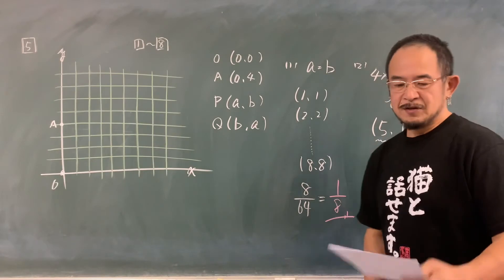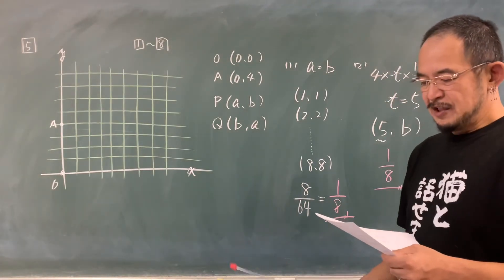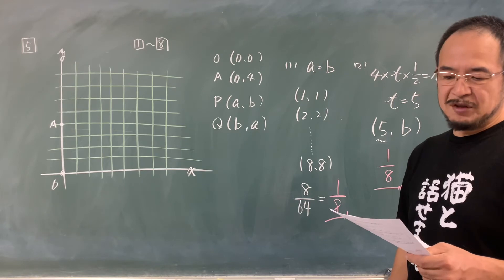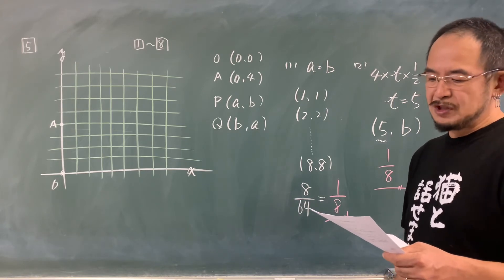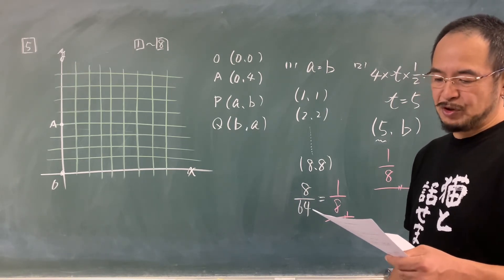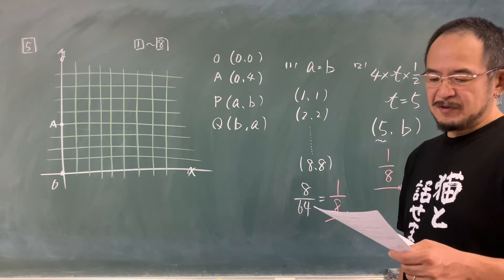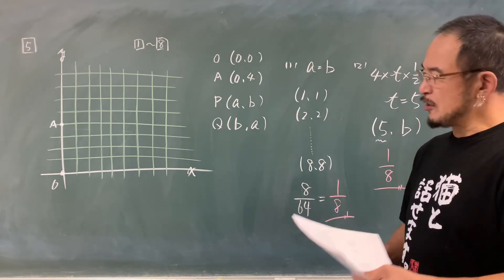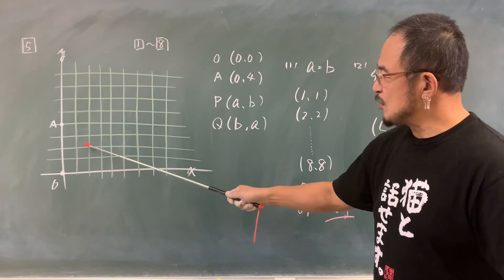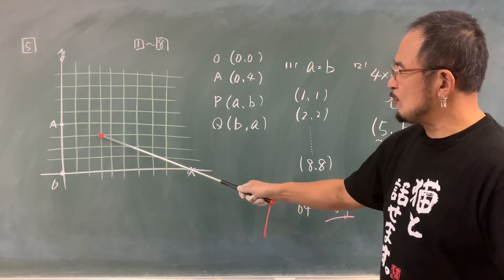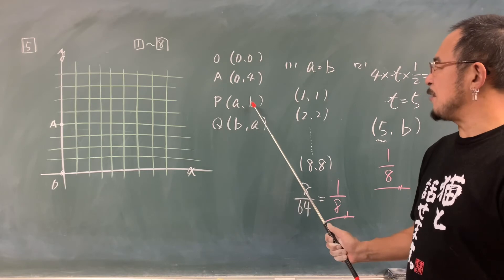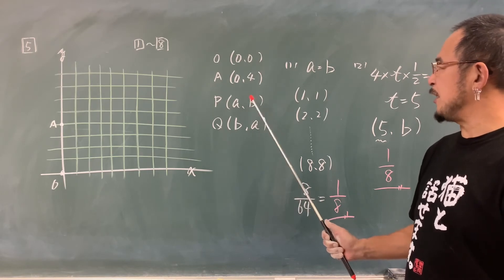5番です。1から8のカードから1枚取り出し、元に戻してから、もう一度引くということですね。元に戻すのがポイントですね。1番、点Pが直線YイコールX上にある。YイコールXということは、1コンマ1、2コンマ2、3コンマ3、4コンマ4と。要するに、1回目と2回目が同じ目が出るということで、1,1から8,8まで8通りになります。目の出方は全部で64分の8で8分の1という答えになります。